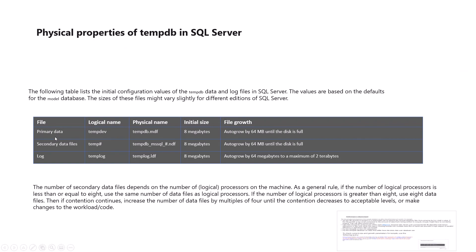There is a primary data file — the tempdb MDF file — which has an initial size taken by default from the model database. This initial size should be defined properly because it affects performance. We need to check how much workload our database has and define the initial size accordingly. There is also an auto-growth setting for when the file fills up, which defines the proportional expansion size.